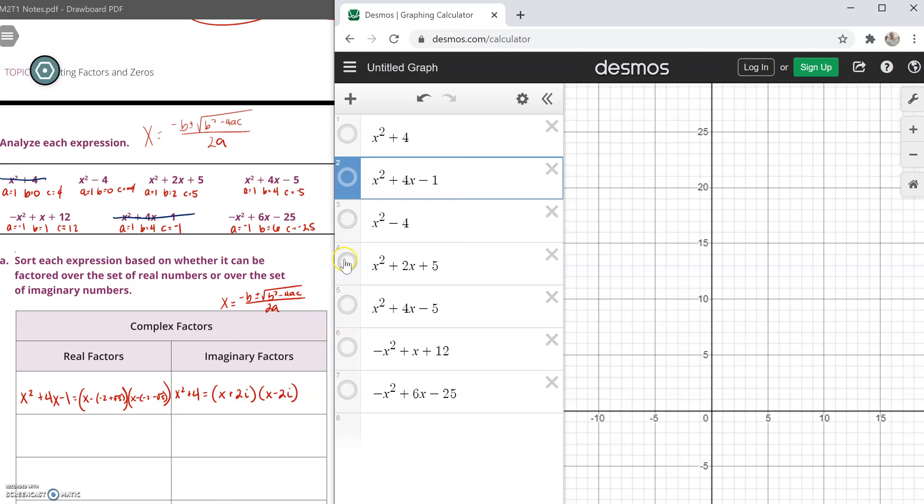Let's take a look at the next one. The graph does not have an x-intercept. So is that expression going to have real factors or imaginary factors? Does it have a concrete solution?